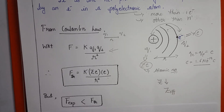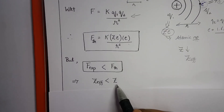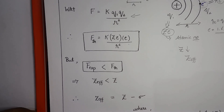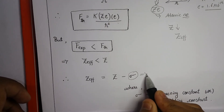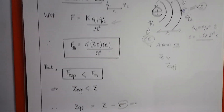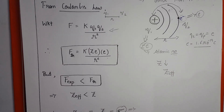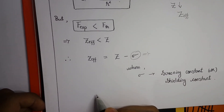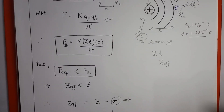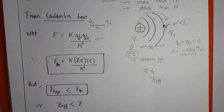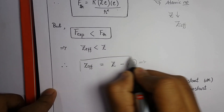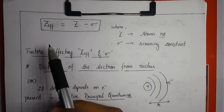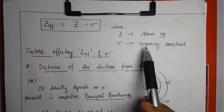Therefore, a new term is introduced: effective nuclear charge. Z_effective is always less than the actual atomic charge Z. When we equate these two terms, we get a new term called sigma (σ), which denotes the decrease in atomic charge due to shielding by inner orbitals. Sigma is called the screening constant or shielding constant — it is the measure of shielding of an electron from the nucleus by the underlying orbital electrons. The final equation is: Z_effective = Z minus σ.